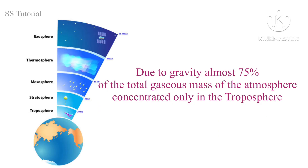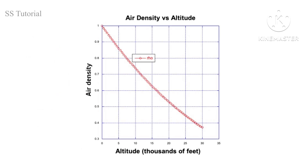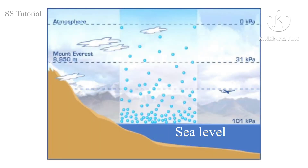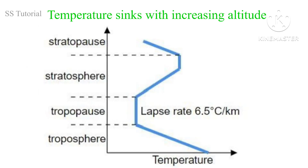Due to gravity, almost 75 percent of the total gaseous mass of the atmosphere is present only in the troposphere, and most of it is concentrated near the surface of the earth. That's why, with increasing height, the density of air decreases. Due to higher density, atmospheric pressure is also highest at sea level, and atmospheric pressure decreases with altitude due to decreasing air density, causing temperature to also sink with altitude.